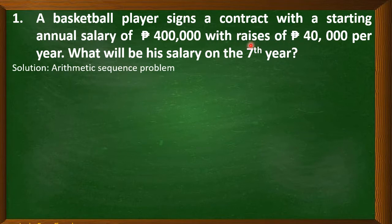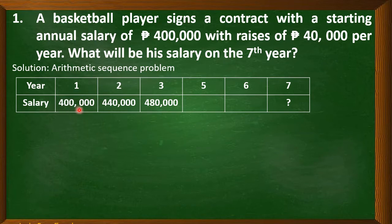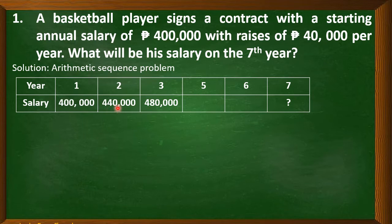Why? Because of this condition that there will be a raise of 40,000 per year for the annual salary of the player. We can illustrate it further in a tabular form. For year one, the salary is 400,000. On the second year, the salary will become 440,000 — that's 400,000 plus 40,000. And on the third year, the salary will become 480,000, which is 440,000 plus 40,000. So we were able to form an arithmetic sequence.